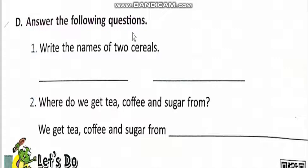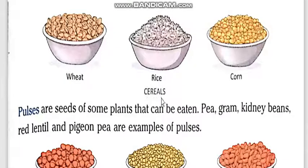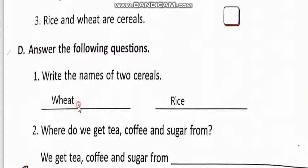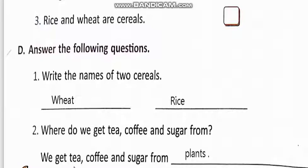D. Answer the following questions. Number one: Write the names of two cereals. Students, we read cereals examples: wheat, rice, and corn. We will write wheat and rice. Question number two: Where do we get tea, coffee, and sugar from? We get tea, coffee, and sugar from plants.